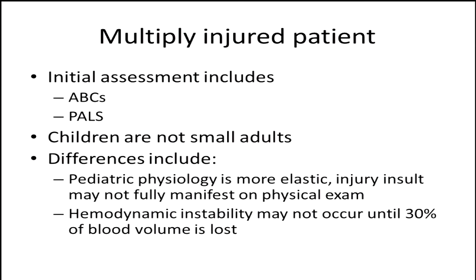Switching gears — what do we do with the multiply injured pediatric patient? The initial assessment is very similar to the adult population. You want to start with your ABCs — airway, breathing, and circulation. In a trauma-based setting, we as orthopedists focus on the extremities while the trauma team secures the airway and assesses breathing and circulation concurrently. PALS is in effect. It's important to remember that children are not small adults — you can't treat them just like adult counterparts because their physiology is vastly different.